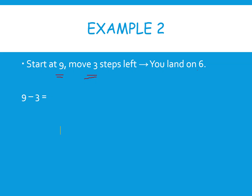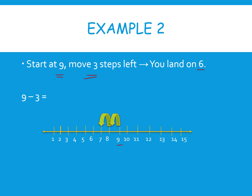Here is the number line. Start at nine. One, two, three — where we land is six. What is nine minus three? Six.